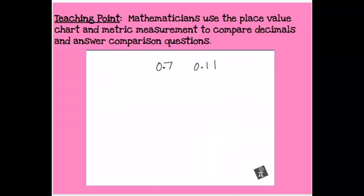When starting to teach about comparing decimals, the first thing I often do is take these two numbers and say: which decimal is larger, 0.7 or 0.11? I specifically say 'point eleven' because I want to identify students who don't have an understanding of place value — as you can imagine, a lot of students will say 0.11 is larger than 0.7. That helps me understand it's going to be worth my time to go through that concept using the number line.